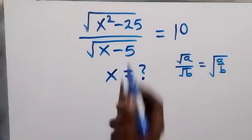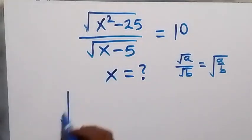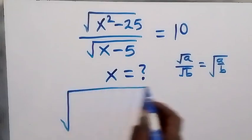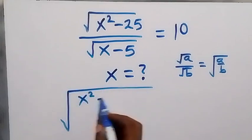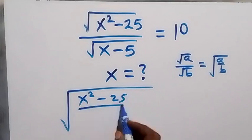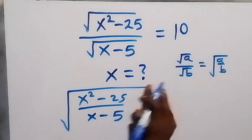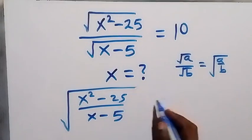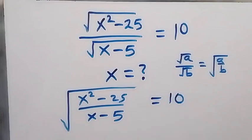So let's apply that here. This will become the square root of x squared minus 25, divided by x minus 5, which equals 10 on this side.